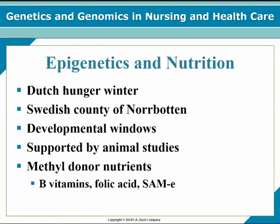Regarding epigenetics and nutrition: as previously discussed, the Dutch Hunger Winter showed the impact of malnutrition on pregnant females. In the Swedish county of Norrbotten, there were extreme famines for several years, and teenagers during that famine passed on health problems to their same-sex grandchildren, demonstrating a developmental window for epigenetics. This supports the hypothesis that a diet high in methyl donor nutrients — B vitamins, folic acid, and SAMe — can alter gene expression.